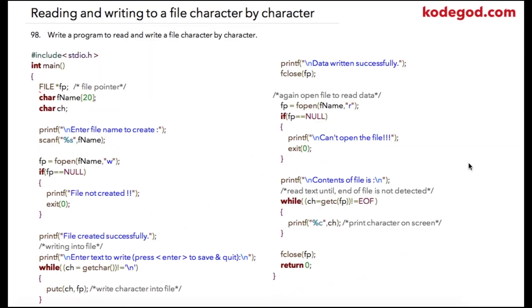In this lecture we are going to write a program to read and write data to a file character by character. In the program I am going to use a file pointer which will be used to read and write contents to a file, especially it will be used to open the file. First I am using a character array where user will be specifying the file name which he wishes to open.